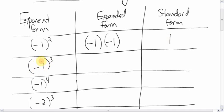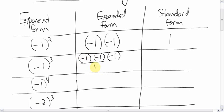Now make a prediction: negative 1 to the power 3 — do you think the answer is going to be positive or negative? Let's take a look. Negative 1 to the power 3 — you do negative 1 times negative 1 times negative 1. Negative 1 times negative 1 is positive 1, then bring down the negative 1. 1 times negative 1 — signs are different — is negative 1. So the answer is negative.